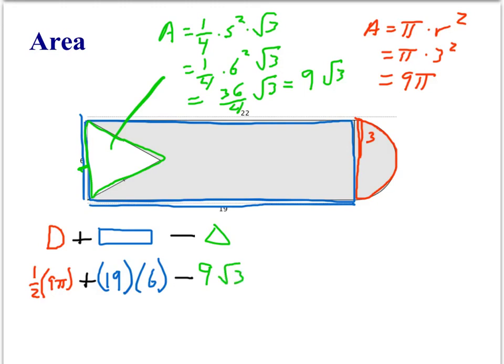And now, we can do some simplification to get an exact answer. Half of 9 pi would be, well, we could call it 9 halves pi. Plus 19 times 6 is 114. Minus 9 root 3.